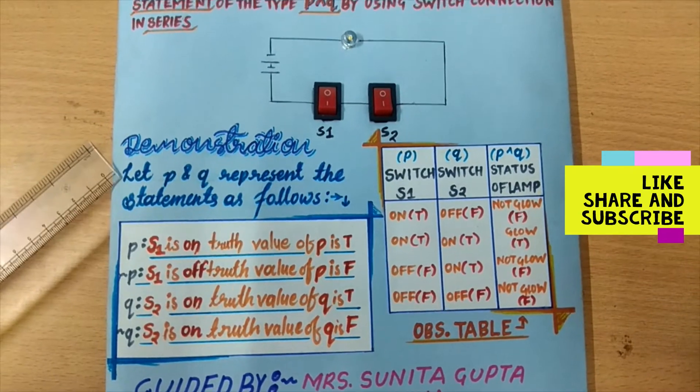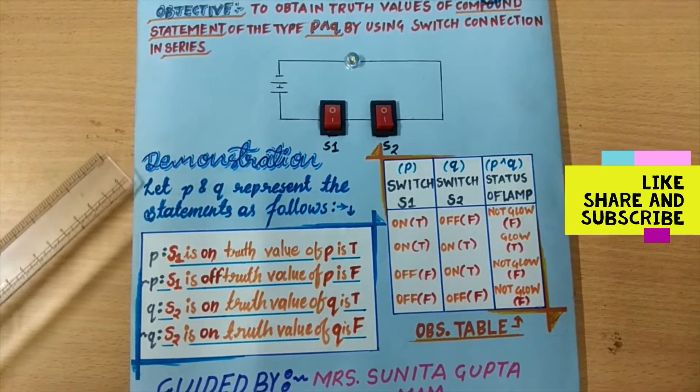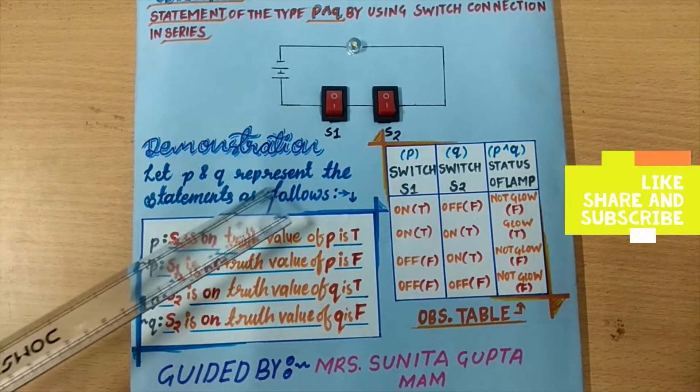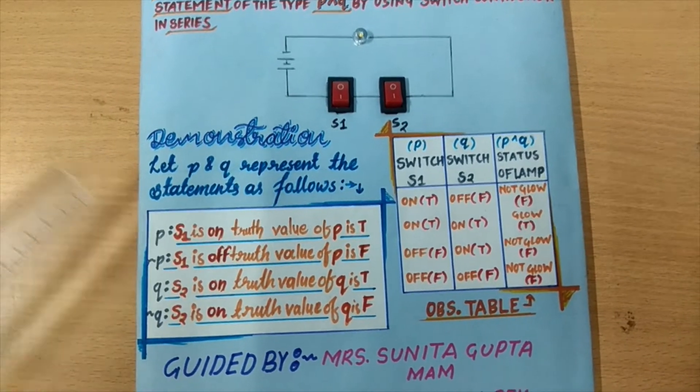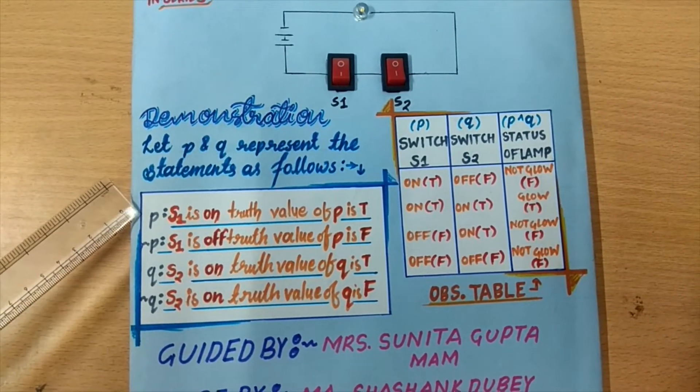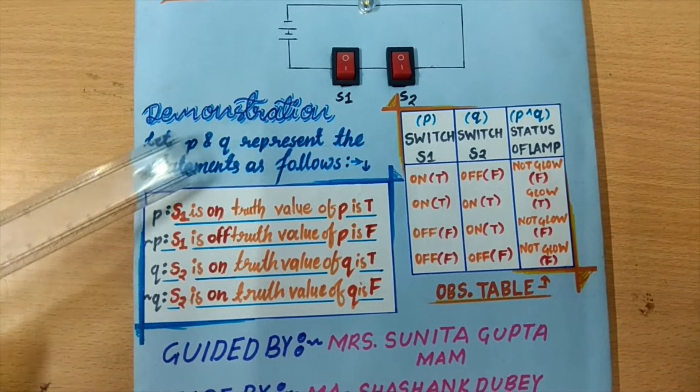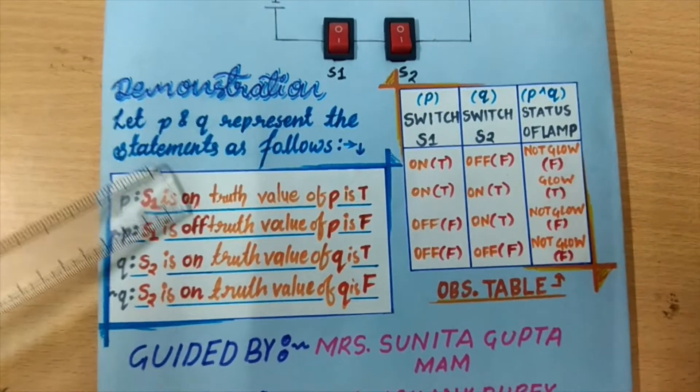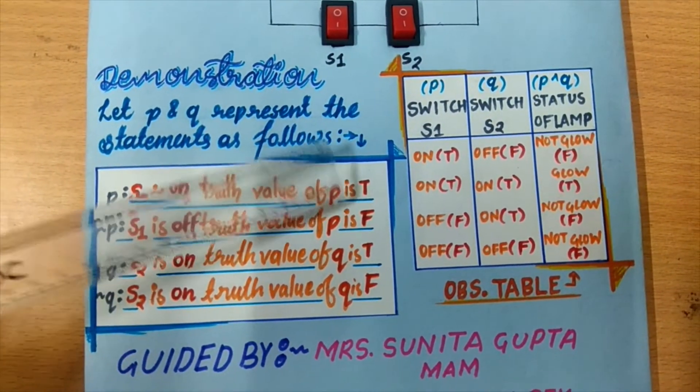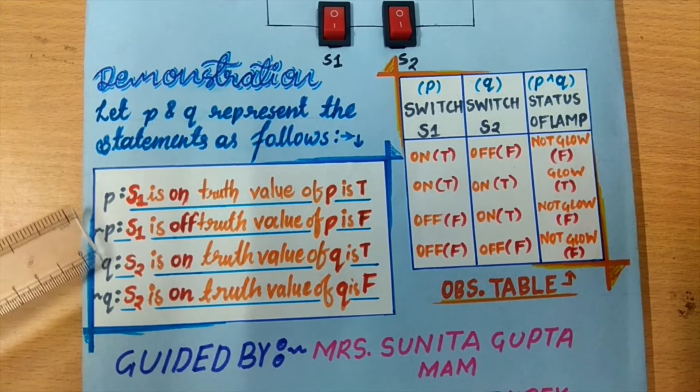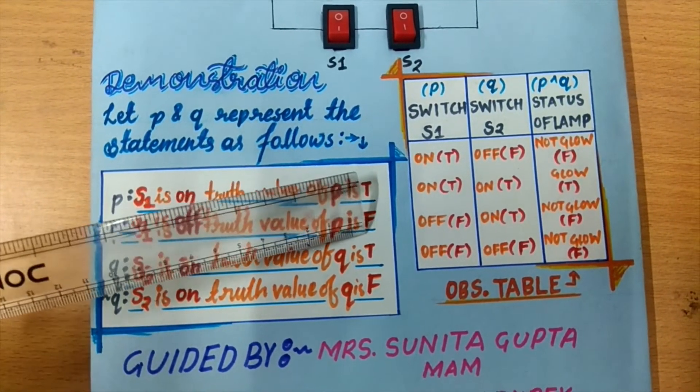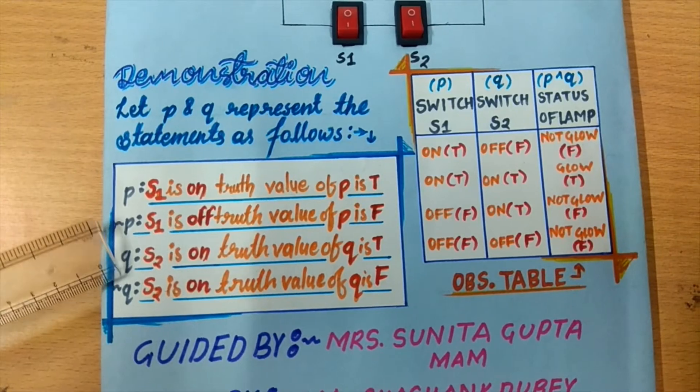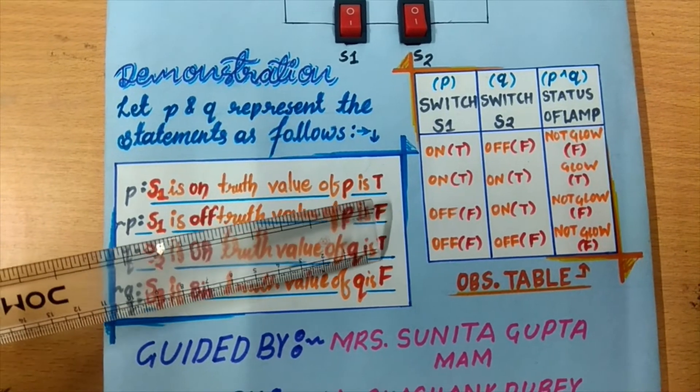Let us start the demonstration. Let P and Q represent the following statements. When S1 is on, truth value of P is true and when S1 is off, the truth value of P is false. When S2 switch is on, truth value of Q is true and when S2 is off, then truth value of Q is false.